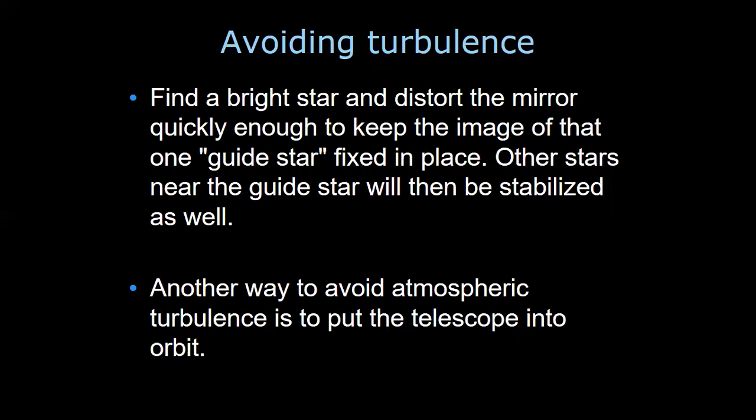To avoid turbulence, you find a bright guide star and distort the mirror quickly enough to keep the image of that guide star fixed in place. Then the other stars near the guide star will be stabilized as well. This guide star technique provides a correction to avoid turbulence.